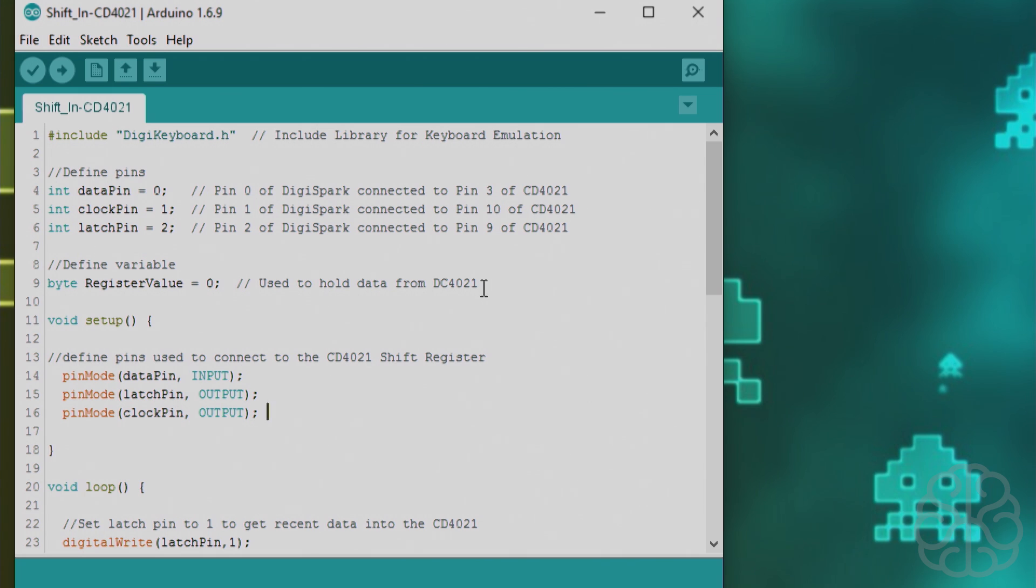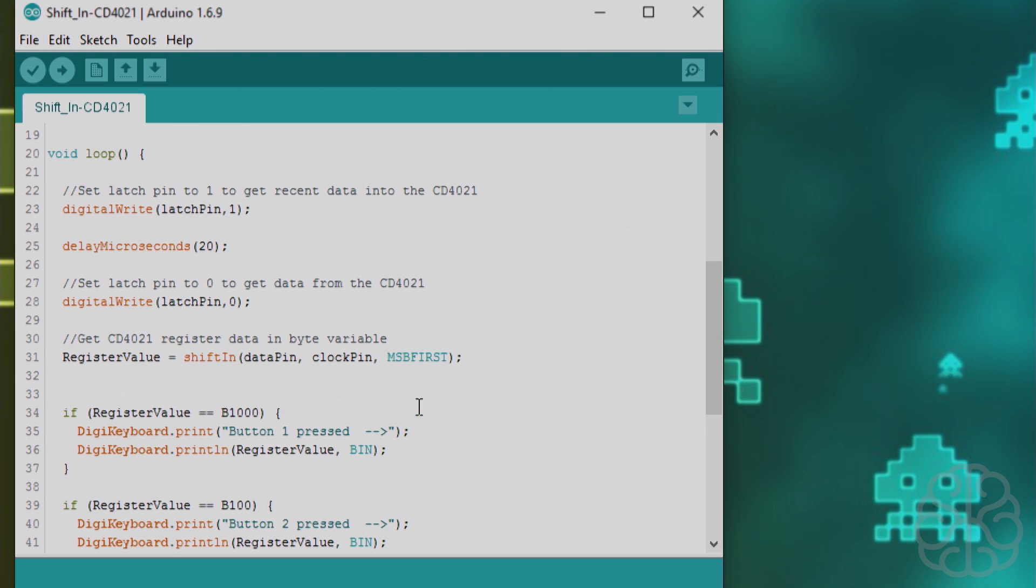In the main setup we define the pins used to connect to the CD4021. The data pin is an input, latch and clock are outputs. Then we get to the main loop. We set the latch pin to 1 to get the recent data into the CD4021, so we're digitalWrite the latch pin to 1, then we do a microsecond delay, and then we set it to 0.